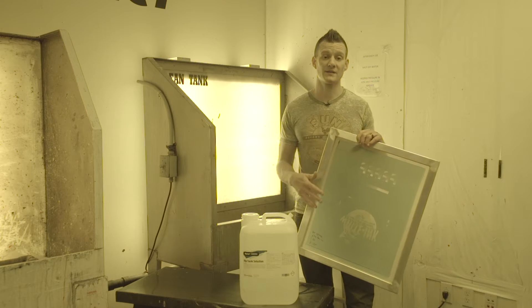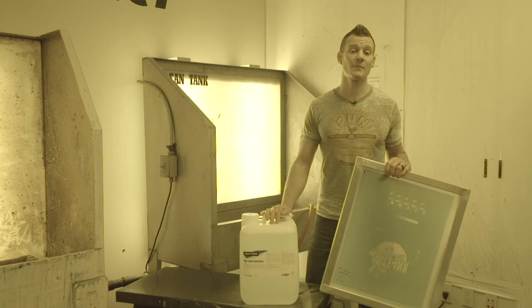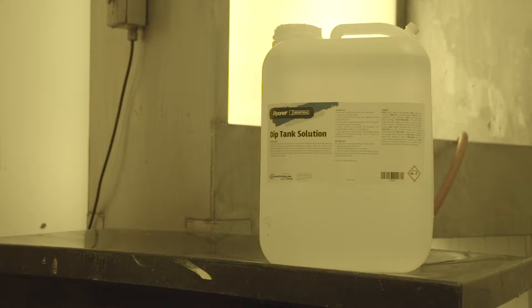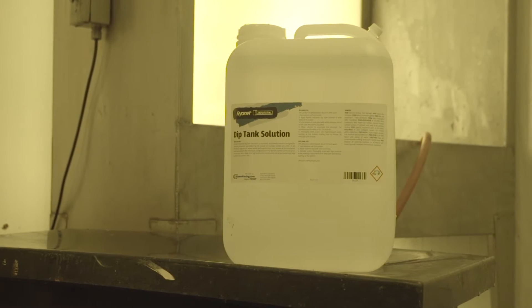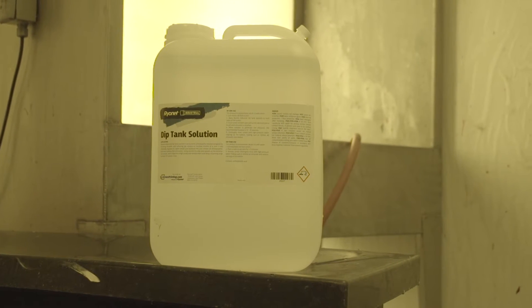To speed up the screen reclaiming process, many production screen printing shops look to a dip tank to increase capacity and lower costs. Ryanitt's industrial dip tank solution is an economic and effective solution for removing emulsion and softening any ink residue.